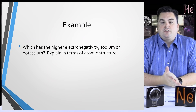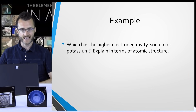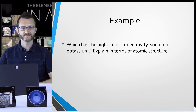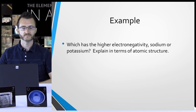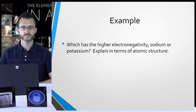Let's do an example. Which has the higher electronegativity — sodium or potassium? We're going to explain our answer in terms of atomic structure. First, let's look up these two elements on the periodic table. Looking for sodium, which is Na, and potassium, which is K — looks like they're both in group one.